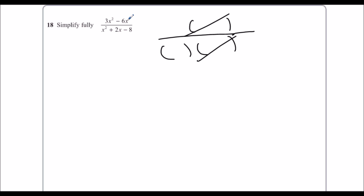So we've got 3 in both of them — 3 and 6 are both in the 3 times table, so 3. And we've also got an x, which is like 3x on the outside. So what times by 3x to make 3x²? x. What times by 3x to make 6x? We've got a minus sign in the middle — minus 2.